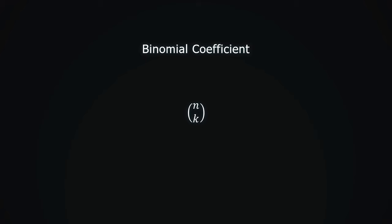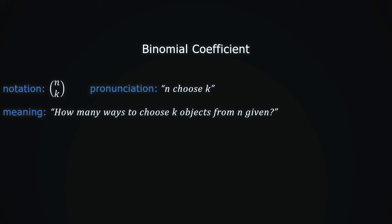The binomial coefficient, denoted as n choose k, counts how many ways can we choose k objects from n available. The objects are all different. For example, let our set contain a triangle, a circle, and a square.